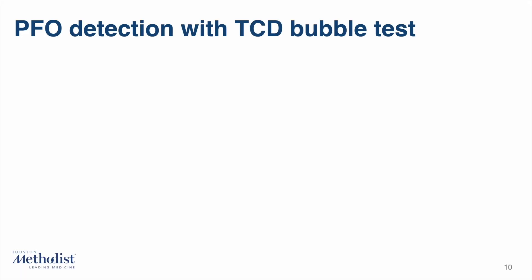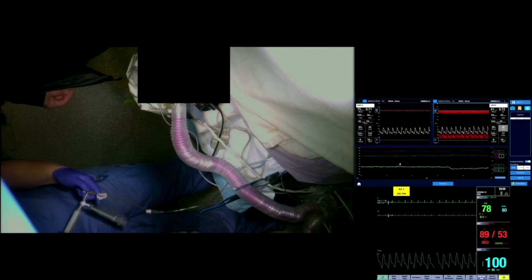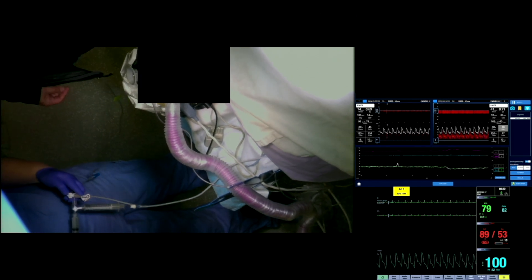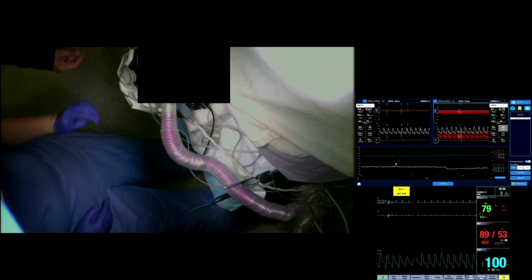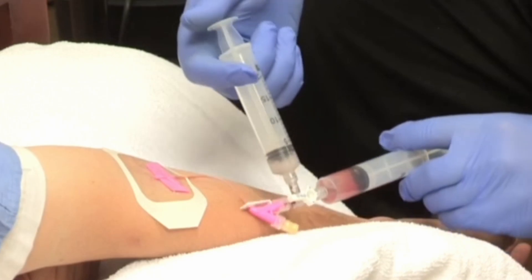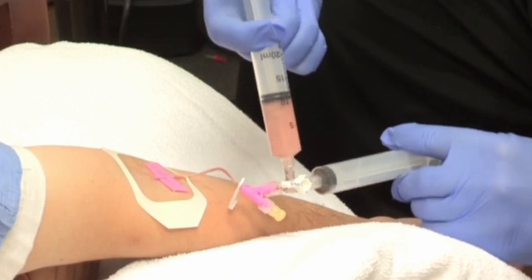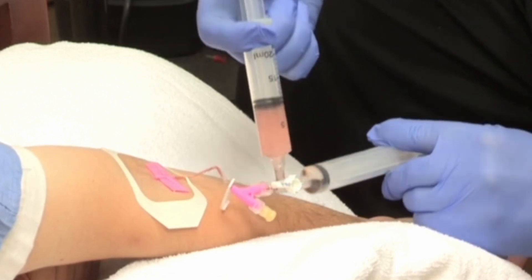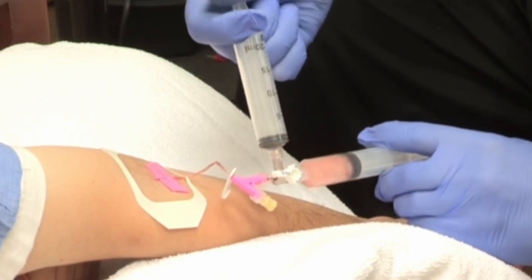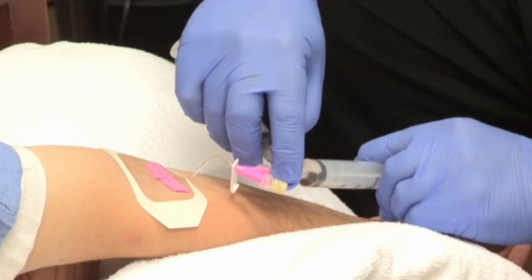Although the TCD bubble test was sensitive enough to detect the PFO, a couple of things can be noted that would have made the examination even more precise. First, the IV line used to administer the agitated saline was long and no saline flush was used after, so many of the bubbles didn't even reach the circulation. Second, since the patient was already draped for the procedure, she was lying down and her arm was not positioned how we would normally position it during a TCD bubble test. This is how we would position the patient's arm in an ideal situation. Also notice that in this textbook example of a TCD bubble test, a small amount of blood has been drawn back into the syringes to create bubbles that are more echogenic and visible on TCD.